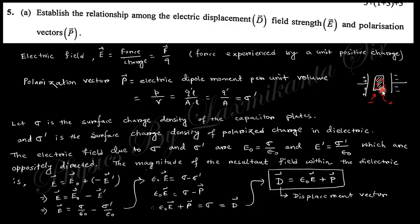This is the plus plate and this is the minus plate, so they induce a minus here and plus here. The electric field due to σ and σ' are E₀ and E' in opposite directions. The magnitude of the resultant field within the dielectric is E = E₀ - E', where E₀ is external and E' is the opposite field generated within the material. E₀ is σ/ε₀, E' is σ'/ε₀, and σ' is P. So σ is the displacement vector D. This is the relation between D, E, and P.